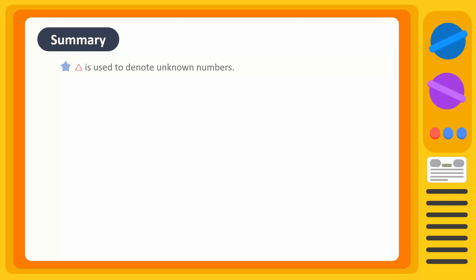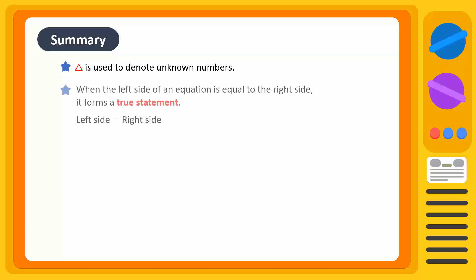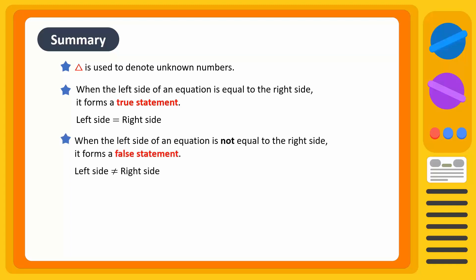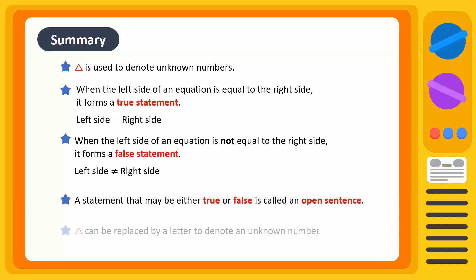To summarize: we learned that the symbol delta is used to denote unknown numbers. When the left side of the equation is equal to the right side, it forms a true statement. When the left side is not equal to the right side, it forms a false statement. A statement that can be either true or false is called an open sentence. We also learned that delta can be replaced by any alphabet to denote the unknown number.